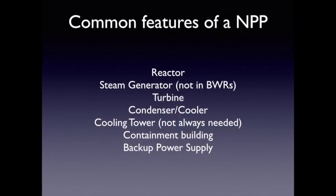Looking at common features of a nuclear power plant: the reactor is common to every nuclear power plant. Most power plants have a steam generator, although the boiling water type reactor does not need one. Turbines are common to drive the generators. Condensers or coolers are also common to every nuclear power plant. Every plant needs a way of cooling down the water — cooling towers are commonly used, although some plants located beside the sea can use seawater as a coolant, so cooling towers are not always needed. Containment buildings shield the reactor, and every nuclear power plant must have a backup power supply in case the reactor or generators fail.